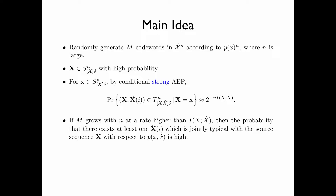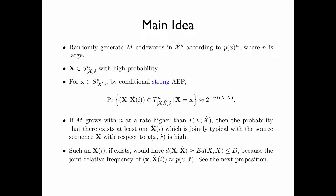If m grows with n at a rate higher than I(x̂), then the probability that there exists at least one codeword which is jointly typical with the source sequence x with respect to p(x̂) is high. Such a codeword, if it exists, would have distortion approximately equal to the expected distortion between the random variable x and x̂, because the joint relative frequency of x and this codeword is approximately equal to the joint probability of x and x̂.